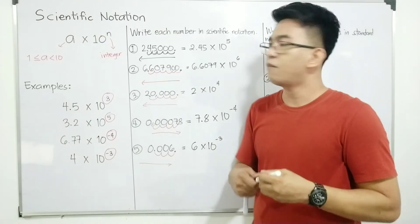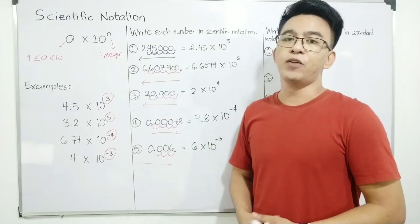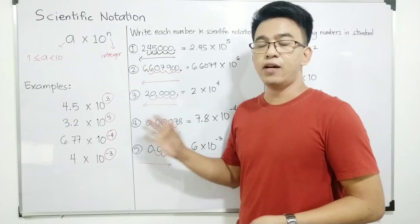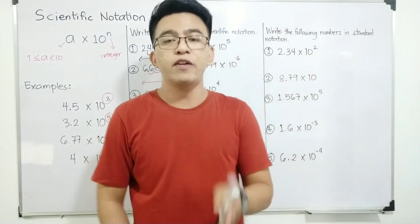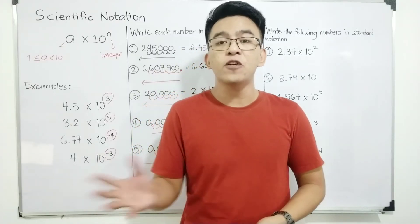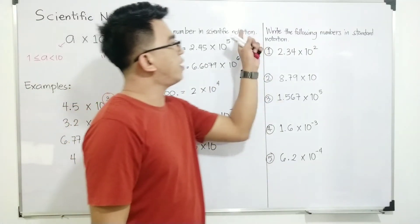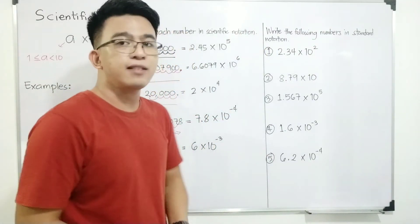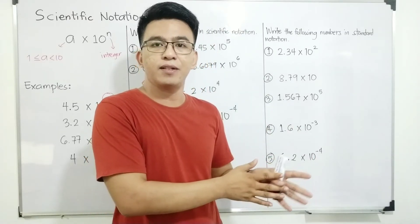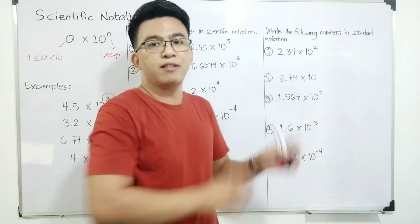Those are the answers when you convert numbers into their corresponding scientific notation. I hope you learned something from these examples. Now let's undo this — we have: write the following numbers in standard notation. When we say standard notation, it is the original number. We need to express the scientific notation back into its standard number.